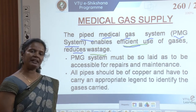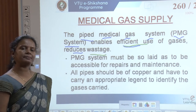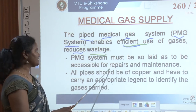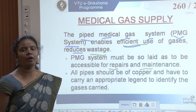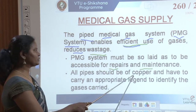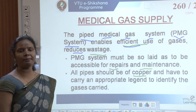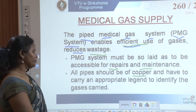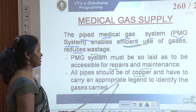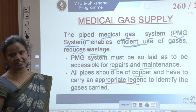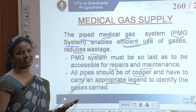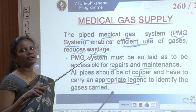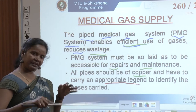PMG systems must be laid to be accessible for repairs and maintenance. All pipes should be of copper — this is mandatory. They must carry an appropriate legend to identify the gases carried. Color codes are used: all gases are color-coded and the same color-coded pipes are provided from the supply to the receiver points.